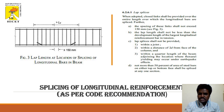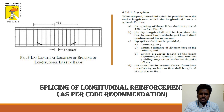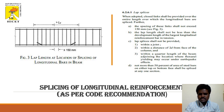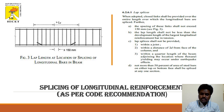Lap splices shall not be placed within joints, within a distance of twice the bar diameter from the face of the column, or within the quarter length of the beam at locations where yielding may occur under earthquake loading. Not more than 50% of the steel area on either the top or bottom face shall be spliced at any one section. In beams, four bars are typically provided — two at the top fiber (compression) and two at the bottom fiber (tension). Maximum stirrup spacing is maintained at supports and minimum spacing at mid-span to control deflection.